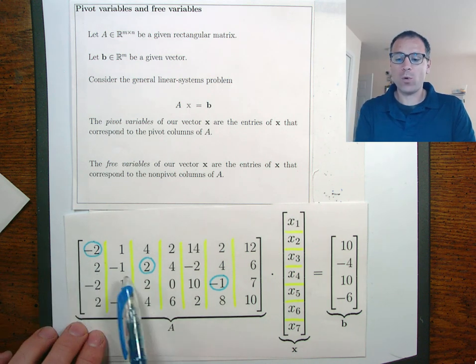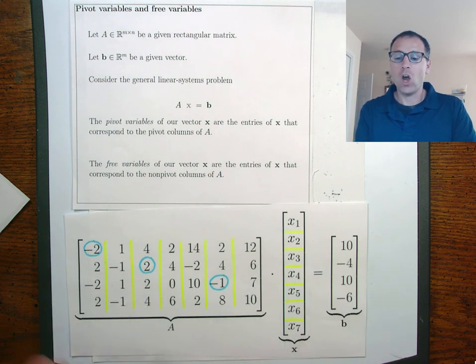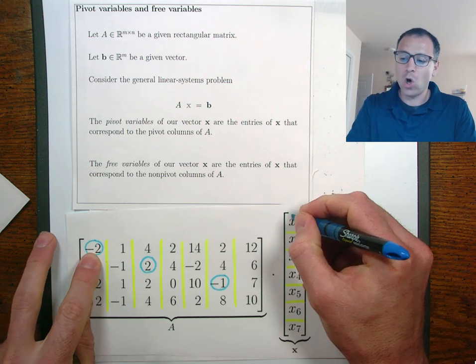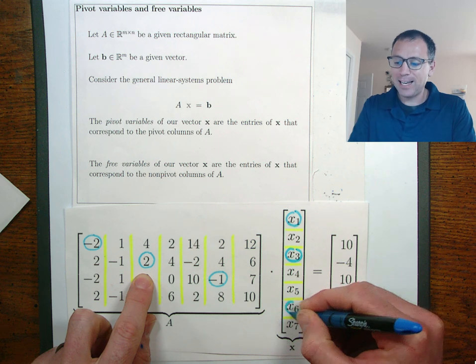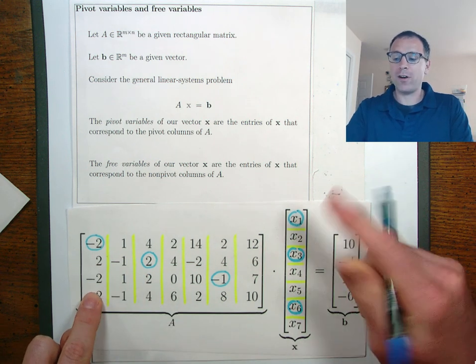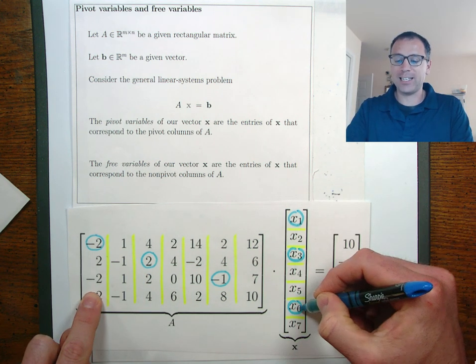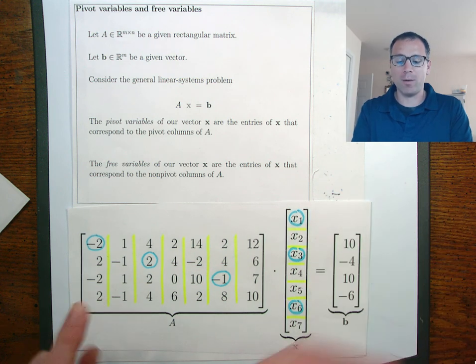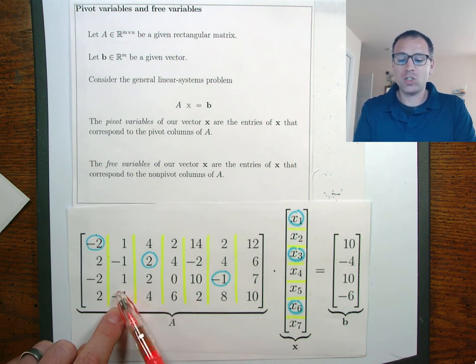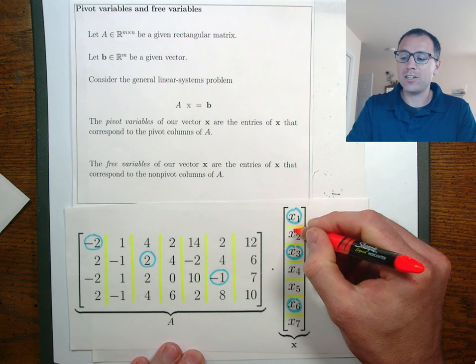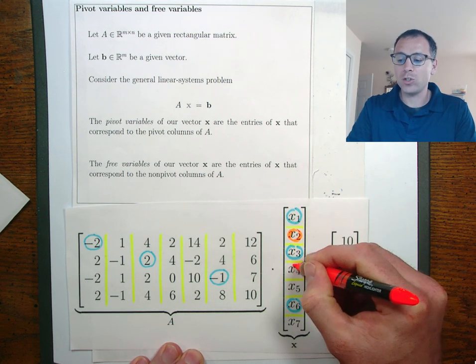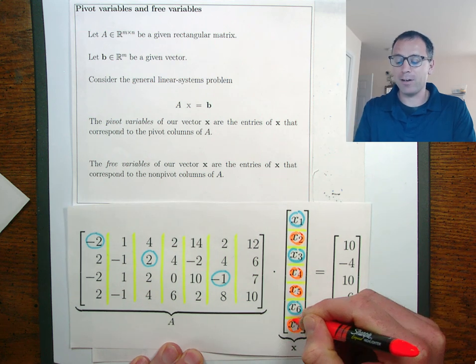In our second toy example we had ax equal b. We see that pivot columns one, three, and six corresponded to variables one, three, and six in x. We call those pivot variables. Non-pivot columns two, four, five, and seven corresponded to non-pivot variables two, four, five, and seven.